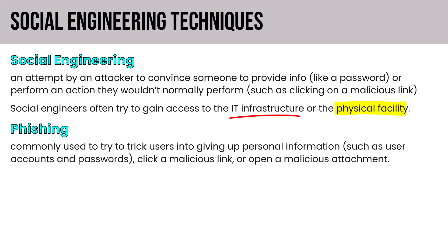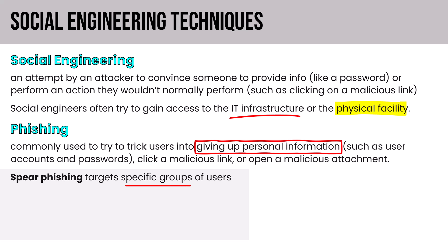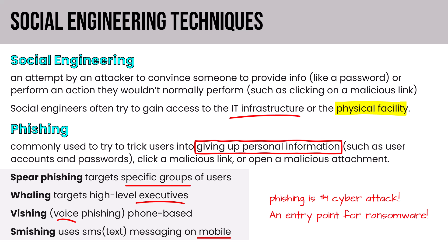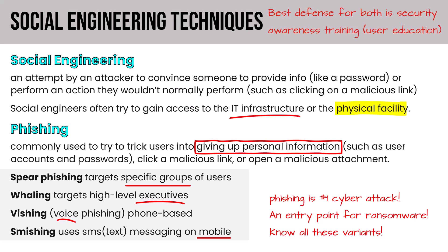Phishing is that number one way in the door — commonly used to trick users into giving up personal information, accounts, passwords, clicking a link, or opening an attachment. You'll want to know the phishing variants: spear phishing targets specific user groups; whaling targets high-level executives; vishing is voicemail-based phishing; and smishing is text-based messaging on mobile. It's the number one cyber attack and an entry point for ransomware. The official study guide notes the best defense for social engineering techniques is security awareness training.